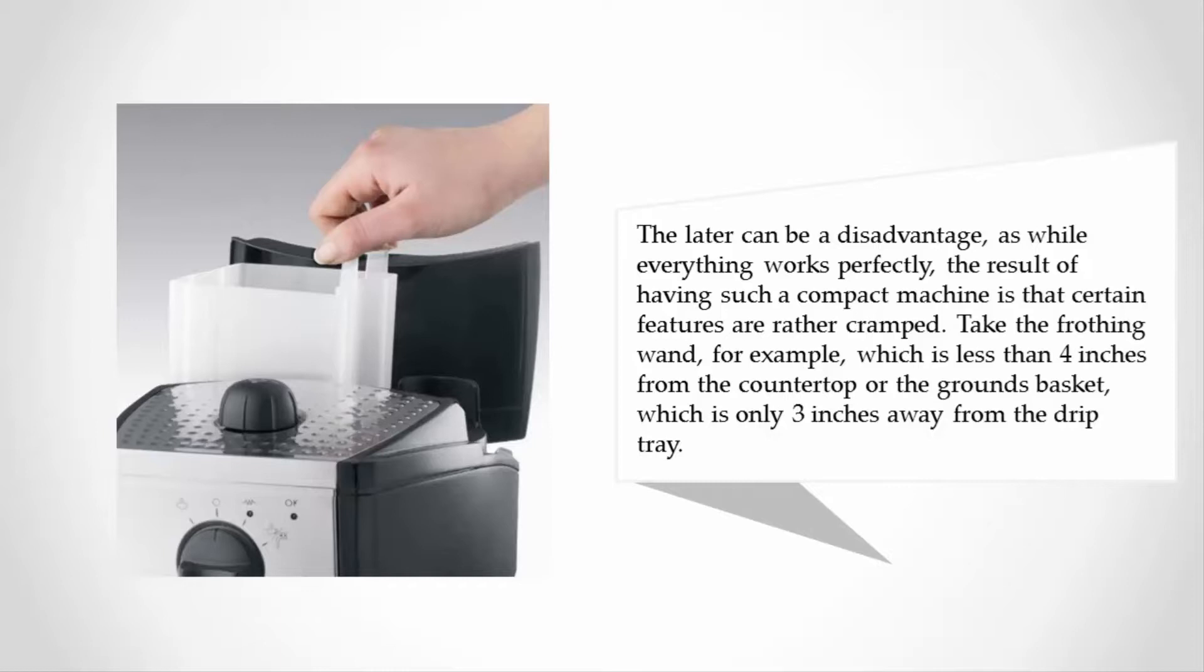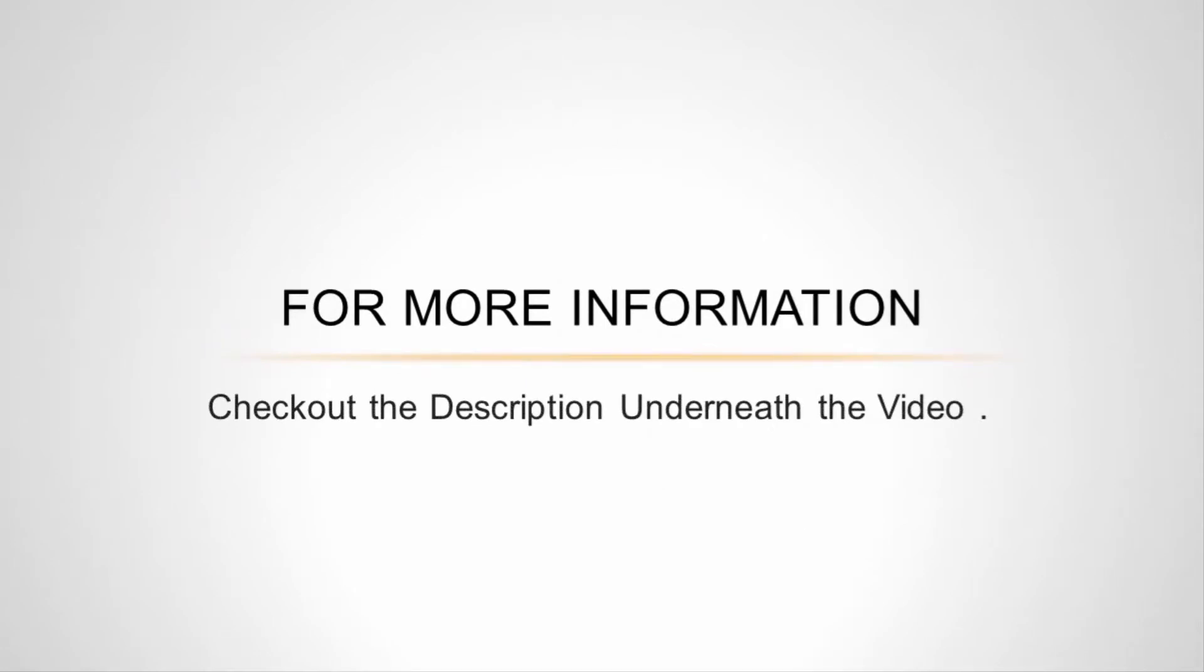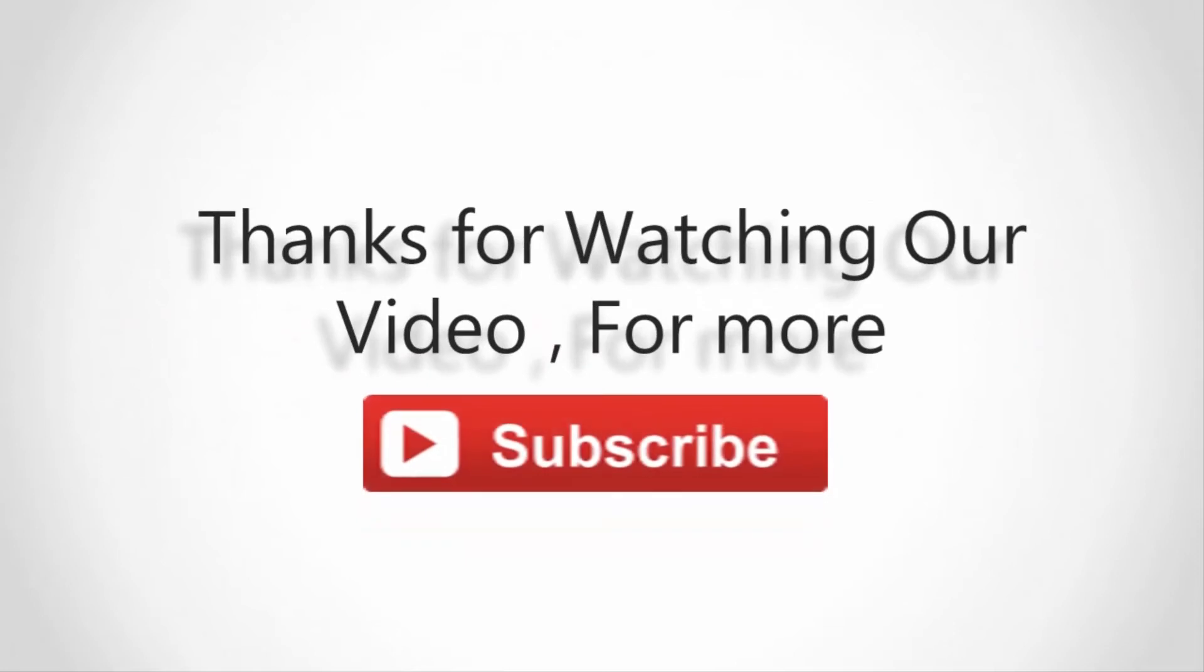Take the frothing wand, for example, which is less than four inches from the countertop, or the grounds basket, which is only three inches away from the drip tray.